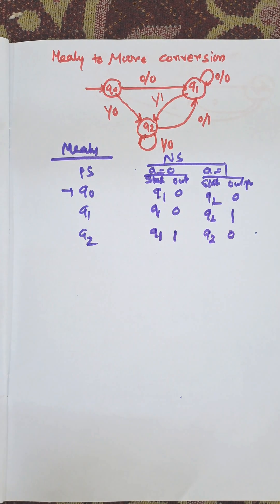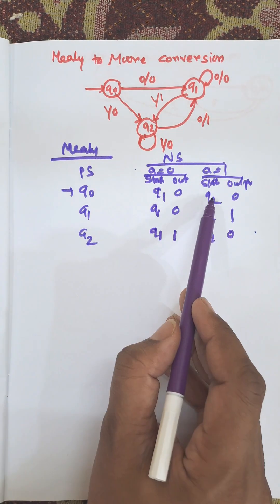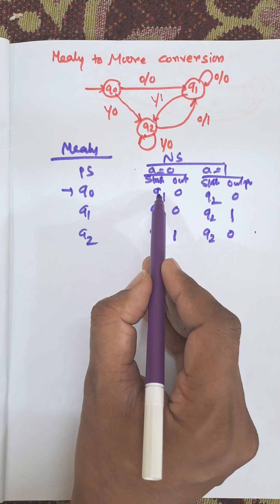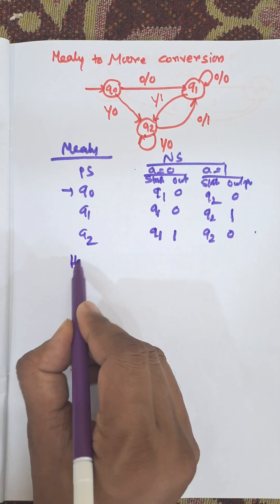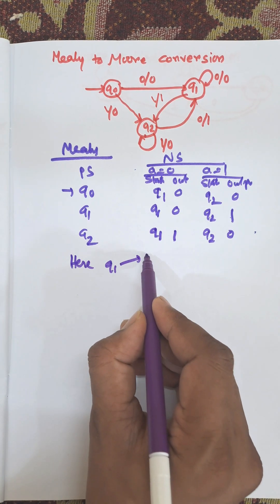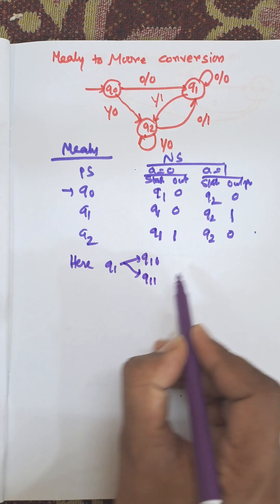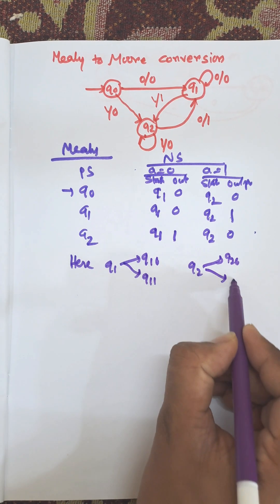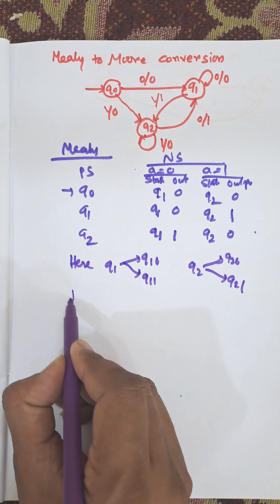From the table, we need to check whether different outputs are there. There is 0 and 1 — for q0 and q1 it is also 0 and 1. Here q1 will be split as q10 and q11, as there are two outputs. q2 will be split as q20 and q21 to create the table of Moore machine.